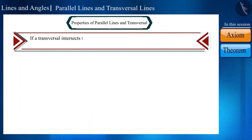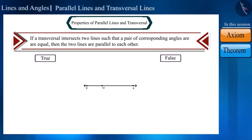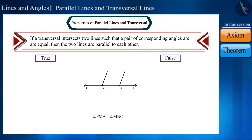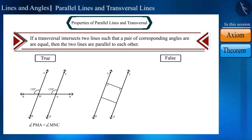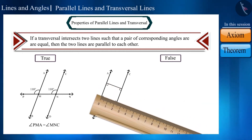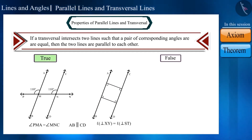The converse: if a transversal intersects two lines such that a pair of corresponding angles are equal, the two lines are parallel. To verify: draw line PQ, mark points M and N on it, construct equal angles PMA and MNC, then extend to form lines AB and CD. These lines do not intersect, and a common perpendicular confirms equal distances — so they are parallel. This is the converse of the corresponding angles axiom.